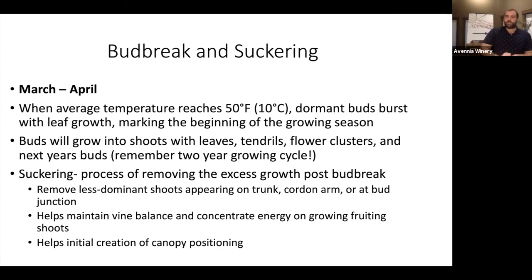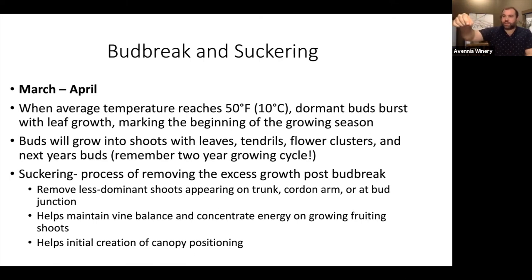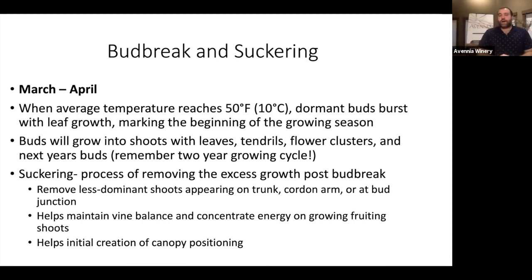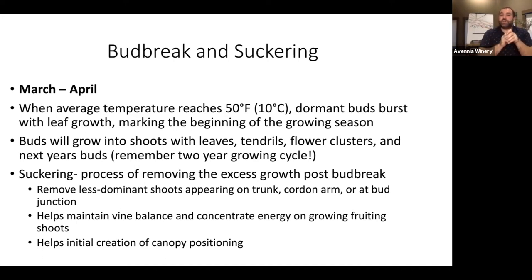Then we get into the growing season. In March or April, when average temperatures reach 50°F (10°C), those dormant buds burst with growth and you start getting leaves, tendrils, and shoots. The buds grow into shoots, and those shoots also carry next year's buds — that two-year growing cycle. At this point, you get a lot of growth all over the vine. Equally important when bud break happens is suckering — going through and removing less dominant shoots and other vegetative growth to maintain vine balance, concentrate energy on the shoots you want clusters from, and help style the initial position of the canopy as it grows.